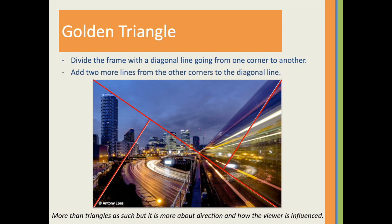Instead of positioning major elements on the lines of thirds, here it is more about creating zones of different visual interest. In the above triangle we have the sky, in the below triangle we have all the roads, on the left triangle we have framing with a tall building, and on the right we have stripes of moving lights. This creates a very dynamic image. As in the rule of thirds, you can use the points of intersection to position important elements, creating direction in how the viewer is going to read the photograph.